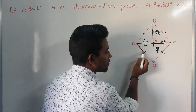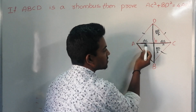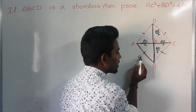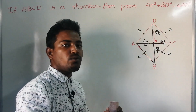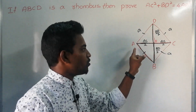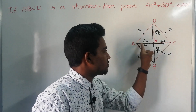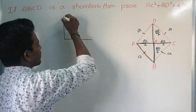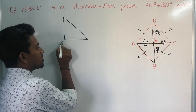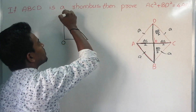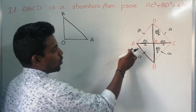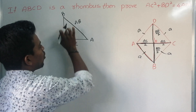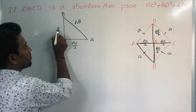Now, in order to solve this problem, I am taking triangle AOB. Each and every side of the rhombus is equal — if one side is 'a' cm, all sides are 'a'. I am drawing triangle AOB: OA = AC/2, AB = AB, and OB = BD/2.